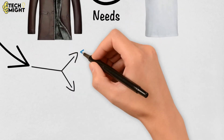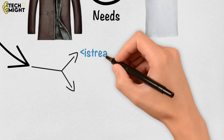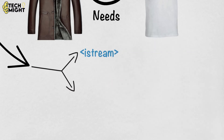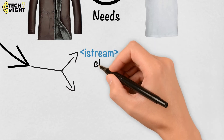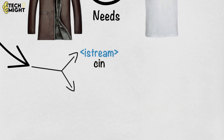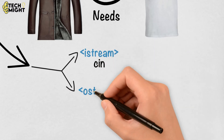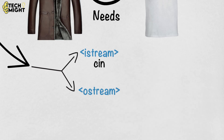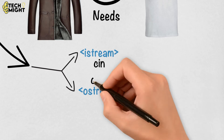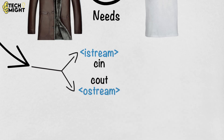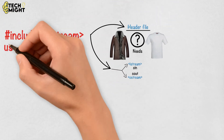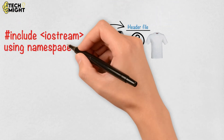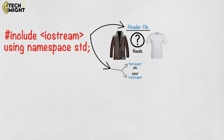This header file is a combination of two header files: istream, which controls all input operations like cin, and ostream, which controls all output operations like cout. Namespace is a standard library — it contains all standard names used in C++.